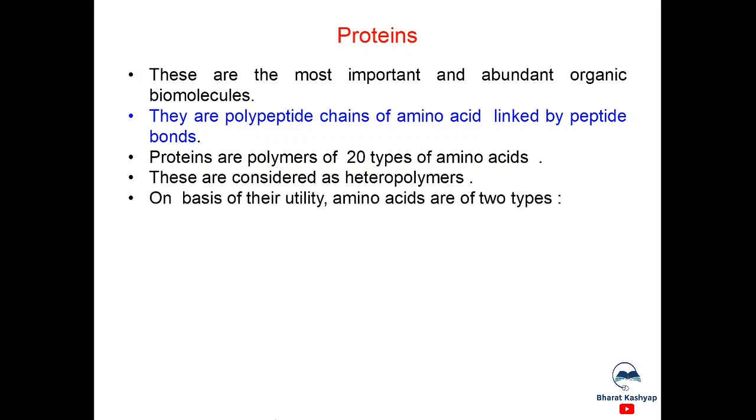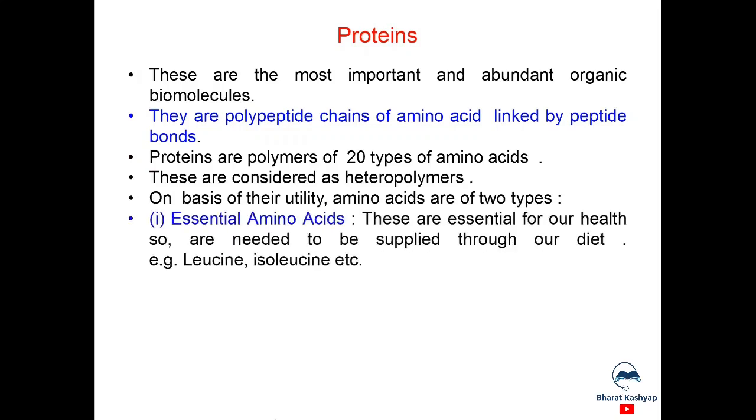On basis of their utility, amino acids are of two types. Essential amino acids. These are essential for our health, so are needed to be supplied through our diet. For example, leucine, isoleucine, etc.